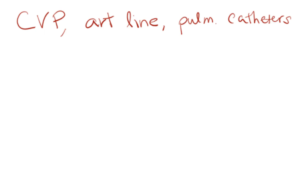In this video I'm going to talk about how to interpret numbers — how to interpret your CVP value, your art line value, and if you have a pulmonary arterial catheter, how to look at that number too. I got a request on explaining CVP and art line and how those values or waveforms might change with COPD or AFib, so I'm going to talk about how to figure out what the numbers are telling you and where the problem is.